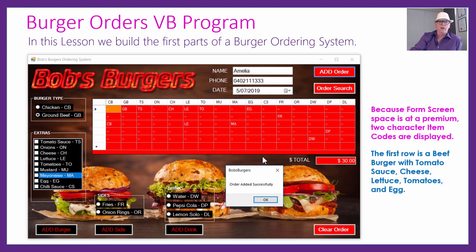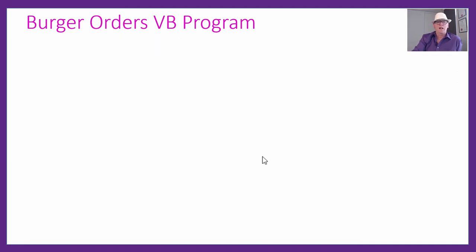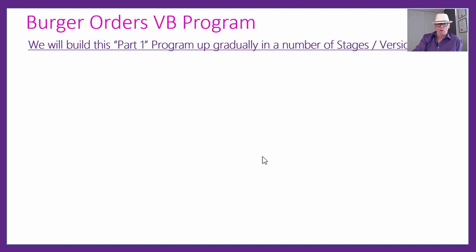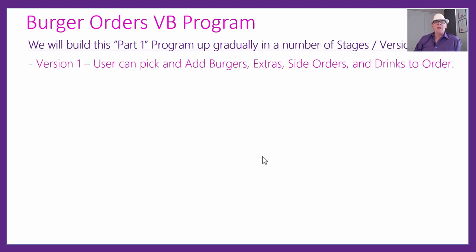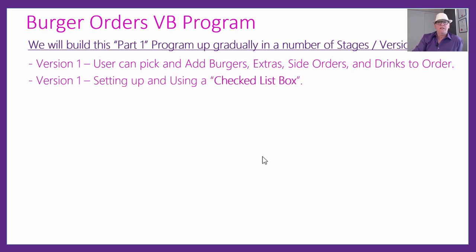That's how it's going to work, and that's what we're going to build. This will be a big job — we suggest you just pause the video when you've had enough and need to stop and do some building or thinking. You can use the time code index in the video description to come back and resume. We're going to build this up in stages and versions. In version one, we'll build the big form and the user will be able to pick and click the items they want to order. We'll be setting up a checked list box, which is something new.